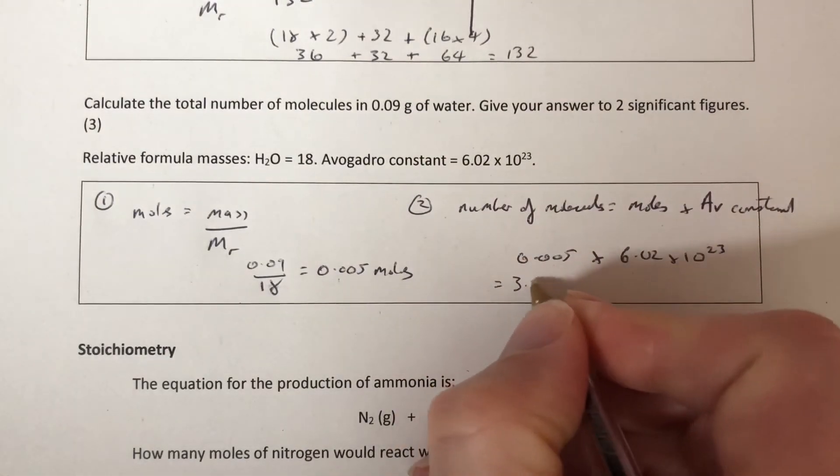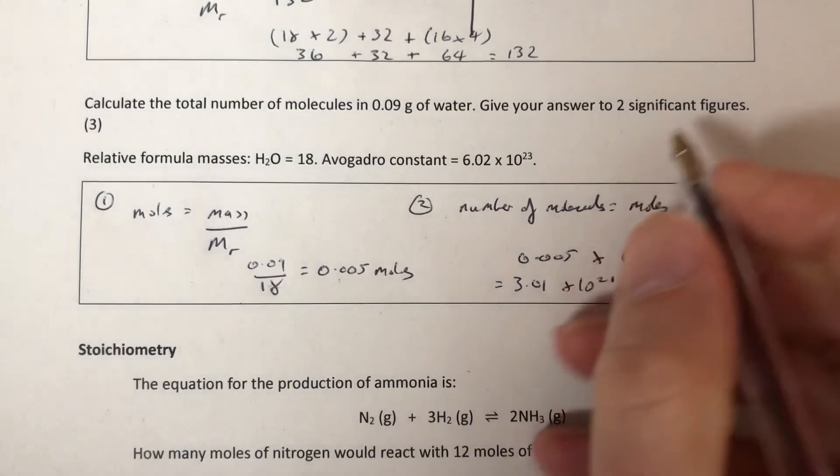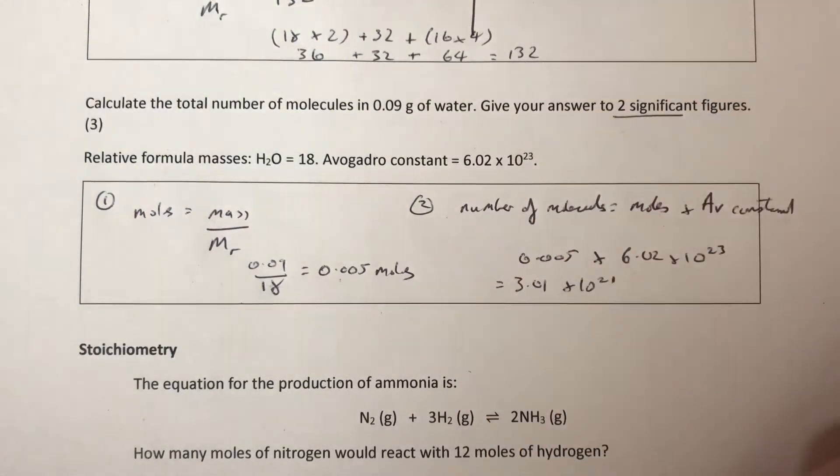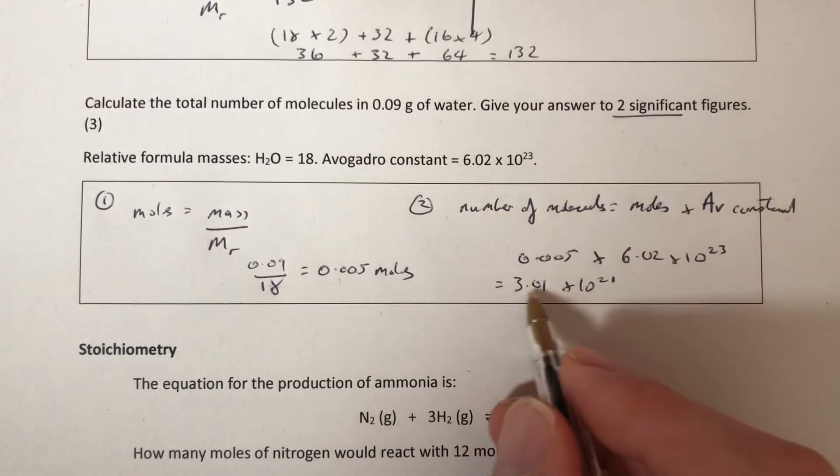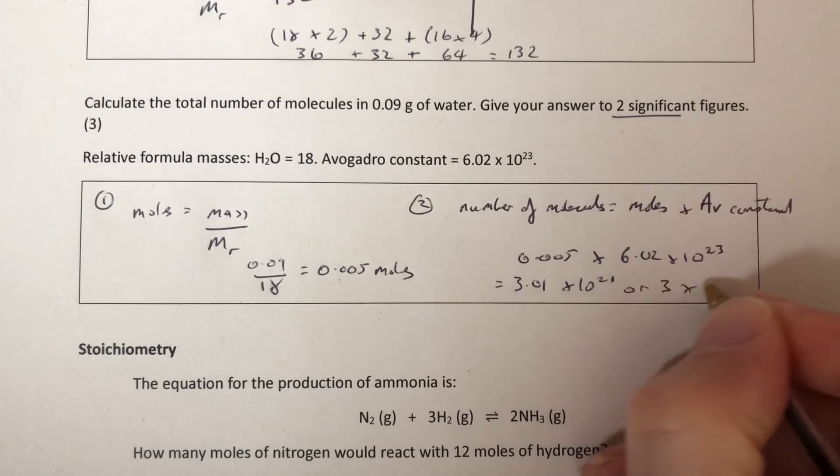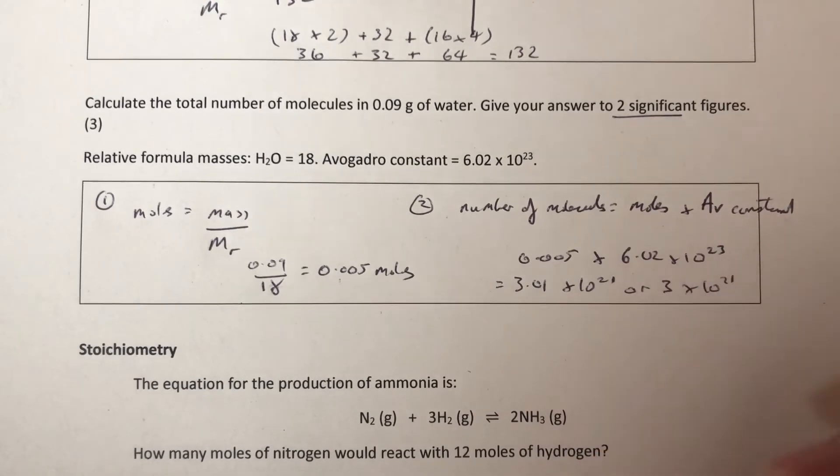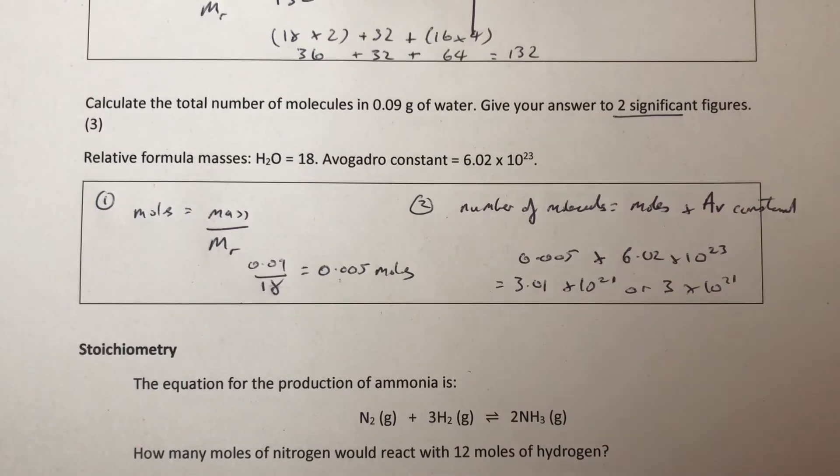And there is our answer: 3.01 times 10 to the 21. Although, is it our answer? This says two significant figures, and that's three significant figures. So that would have to be 3.0 times 10 to the 21. There is our answer.